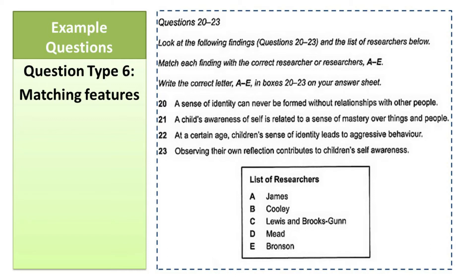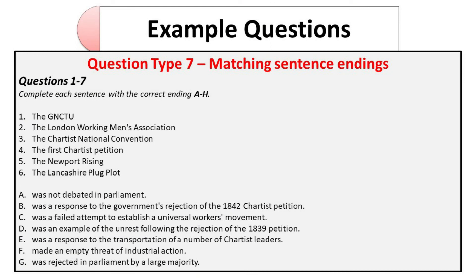Question type seven is Matching Sentence Endings. This question consists of two things: the first part of sentences (heads) and the tail endings of those sentences. You need to match the right head with its correct tail. For example, if question one's correct tail is D, you write D in front of question one. You determine this by reading the text and deciding which tail is correct for the given head.